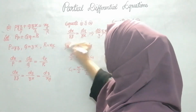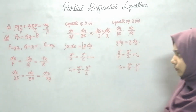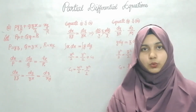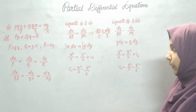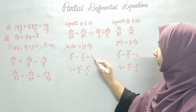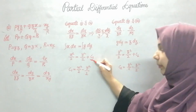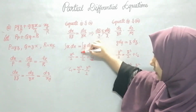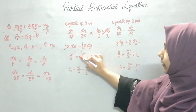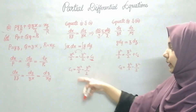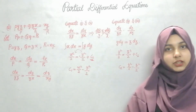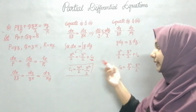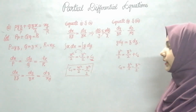Now I can integrate both sides. The integration of x is x²/2 and the integration of y is y²/2, plus a constant C1. I need the value of C1, so I send y²/2 to the other side: C1 = x²/2 − y²/2.